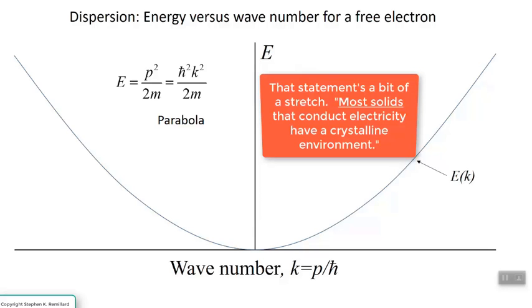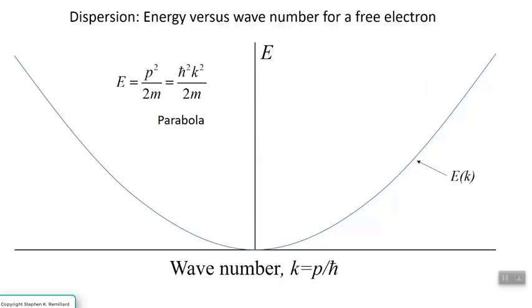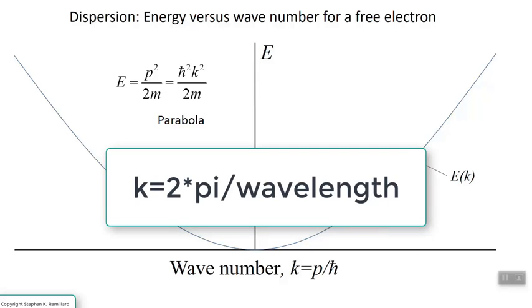First let's talk about what an electron that is not in a material lattice does. What we see graphed here is the energy dispersion relation for a free electron. Dispersion relation means energy as a function of wave property. In this case it is a function of wave number k, which is 2π divided by the wavelength.